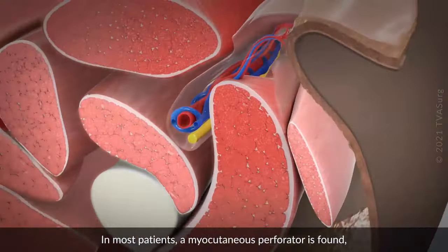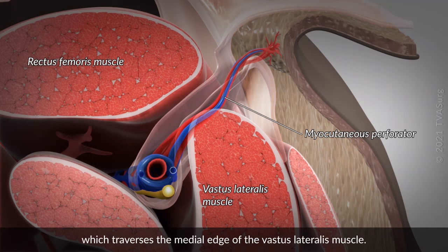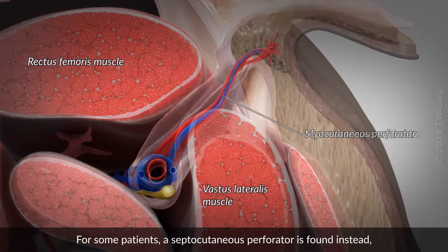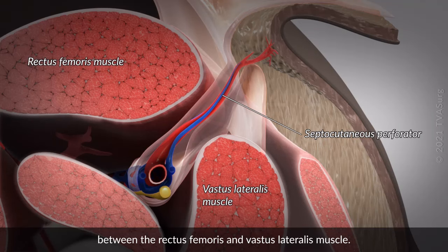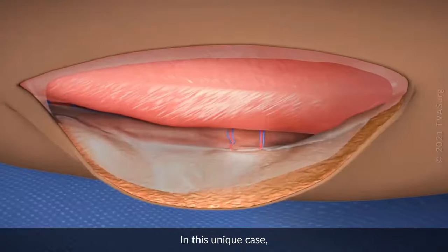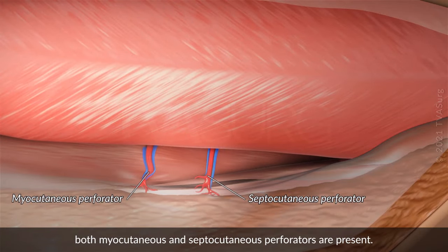In most patients, a myocutaneous perforator is found, which traverses the medial edge of the vastus lateralis muscle. For some patients, a septocutaneous perforator is found instead, which runs in the intermuscular septum between the rectus femoris and vastus lateralis muscles. In this unique case, both myocutaneous and septocutaneous perforators are present.